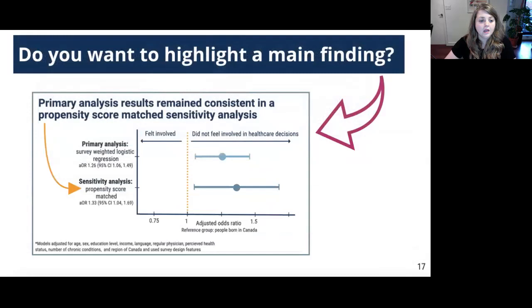Now, one thing I find to be really helpful with charts and figures and tables is literally spelling out what I want the audience to get out of that image. And this can be done in a few ways, but the easiest are either just putting a box around a key area or using a really big arrow.